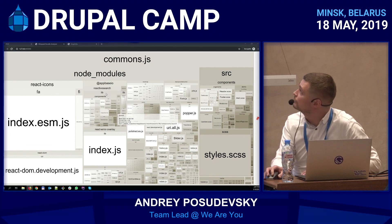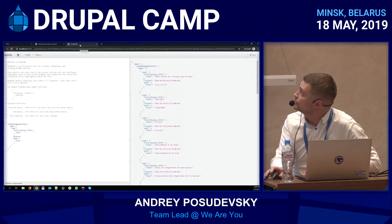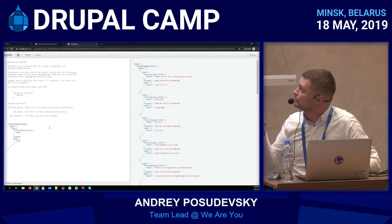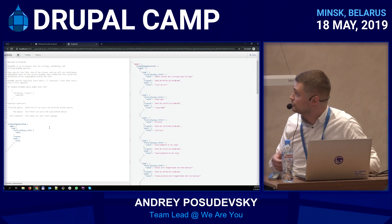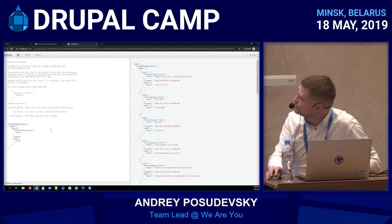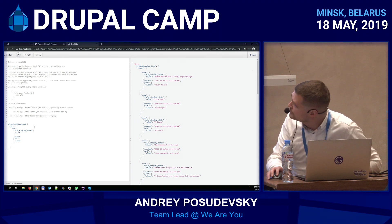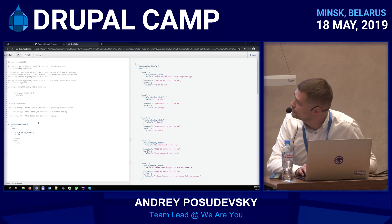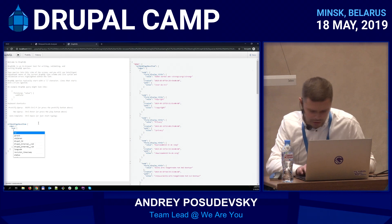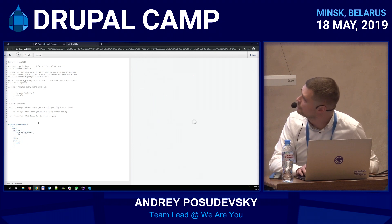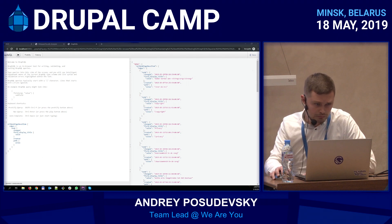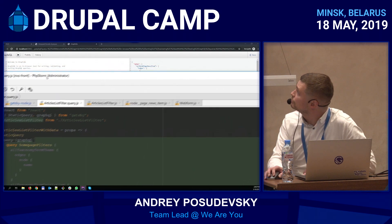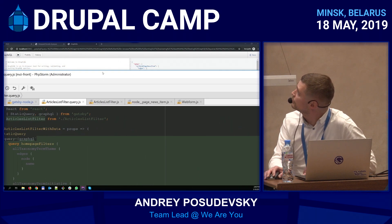There is also a local GraphQL explorer. You can explore all the data which Gatsby got from Drupal. Once you run 'gatsby develop', which spins up your development version of the front-end application, you can play with the data and query it to see what fields you have. It has autocomplete, and you can see the data right away.